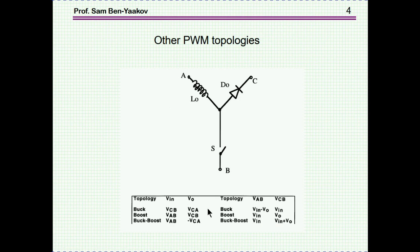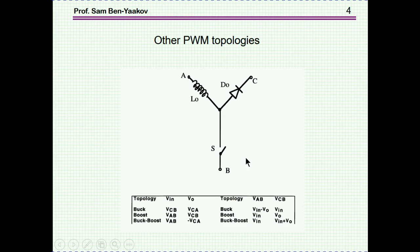Now, this phenomenon is not limited to the boost converter. In fact, any PWM converter will have this problem, because any PWM converter is based on this generic cell, which has an inductor, diode, and switch. In the case of a boost, this is ground, this is the input, and this is the output. In the case of a buck converter, this is the input, this is the output, and this is ground. So any topology of PWM will have this situation of a reverse current.